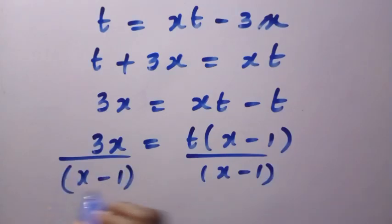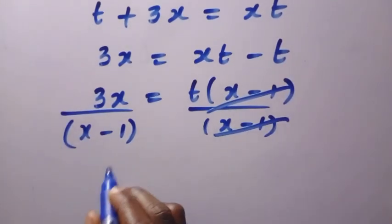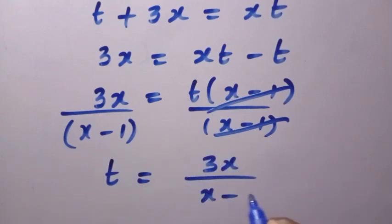By doing so, we are going to have x minus 1 cancelled. And we have t equals 3x divided by x minus 1. So, we have made t the subject.